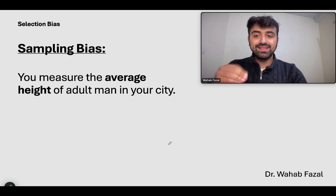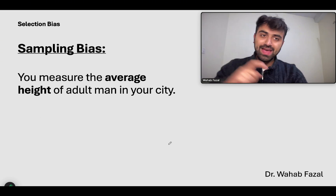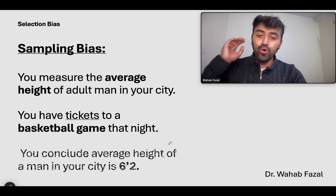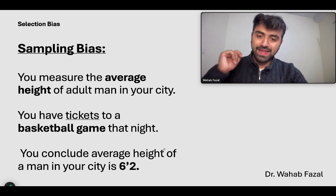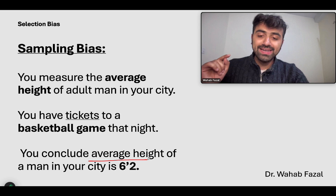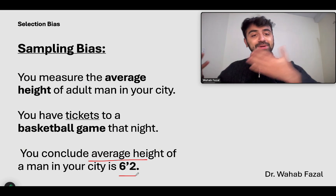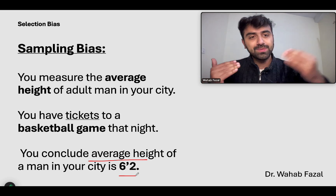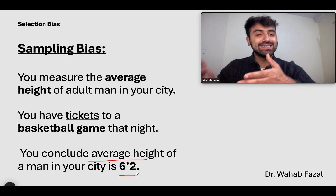You want to measure the average height of an adult man in your city. That night, you happen to have tickets to a basketball game. You go to that basketball game and measure every basketballer. You conclude that the average height of a man in your city is 6'2". Is this true? No. Because this sample does not represent your population — not an average person becomes a basketballer. This is sampling bias.